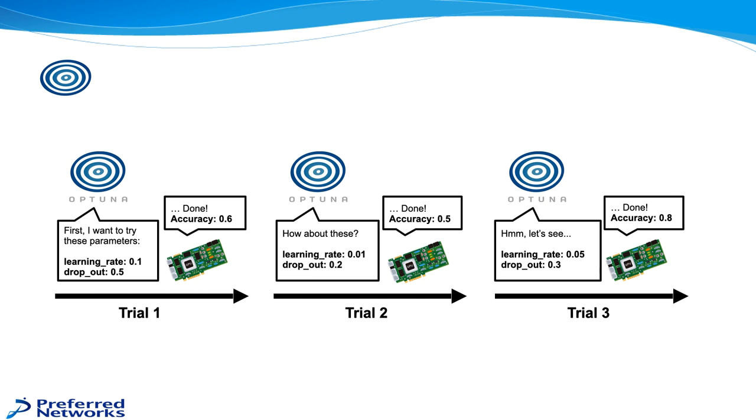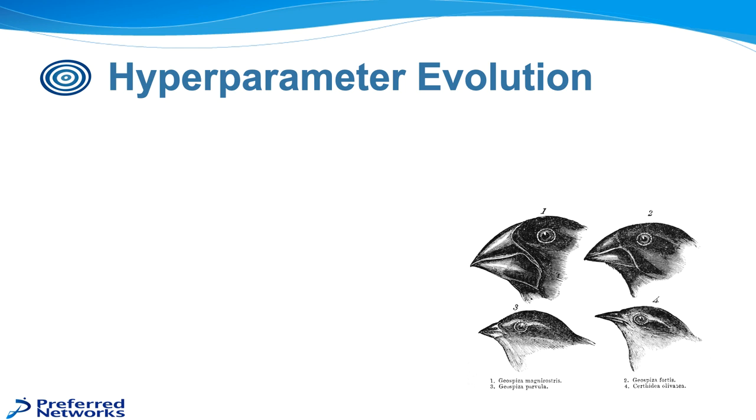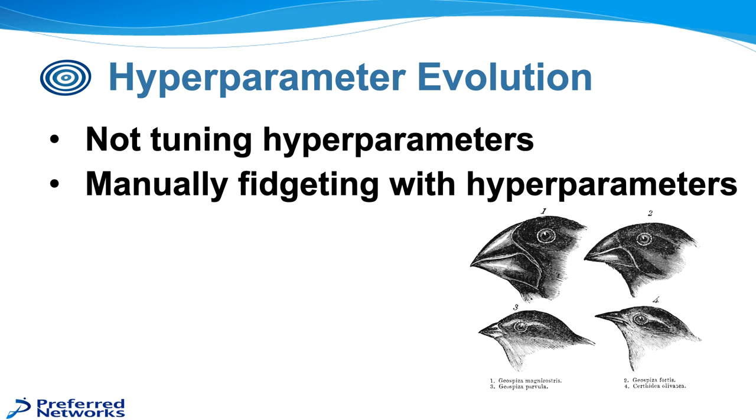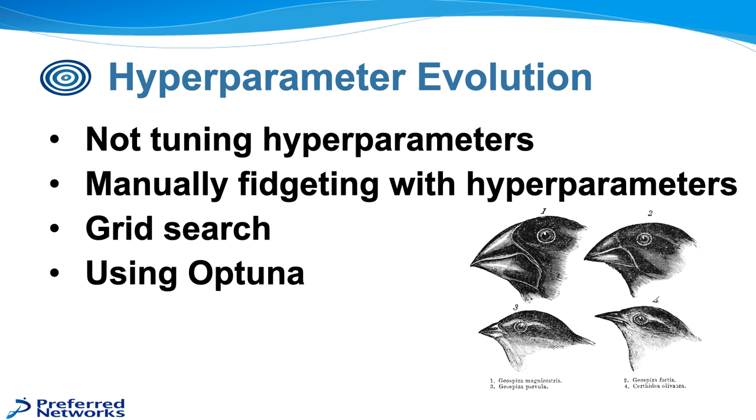So usually as people begin to work with deep learning algorithms, they go through sort of a hyperparameter evolution. The first step is, hyperparameters? What hyperparameters? Basically they're not tuning them. They just take the default values, or perhaps the values from the research papers. And then the next step is they begin to realize how important they are and people start to manually fidget with the hyperparameters to try and see what would be the appropriate value. And then, well, just manually fidgeting with this doesn't seem to be giving us a full search space, so then maybe try grid search. But there are problems with grid search. It doesn't focus in on areas of higher benefit. There's some redundancy when you're using similar values for a particular hyperparameter with multiple attempts. And so then we hope after this presentation you'll have the confidence to start using Optuna for your hyperparameter tuning.